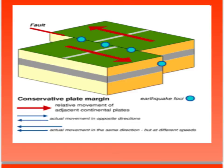Here's a diagram of a conservative plate margin. One plate moves in one direction and the other in another — they're not always 180 degrees apart in real life, but they move in different directions. As they try to slide past each other, they stick for a long period of time, and pressure builds up. When eventually the pressure is too much for the rocks to bear, they slip — and that slip, that release of pressure, is the earthquake happening. You'll also notice there is no volcanic activity at conservative plate margins — it is only earthquakes that occur here.